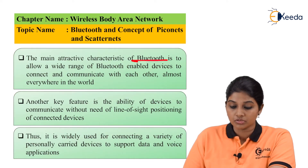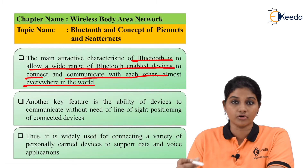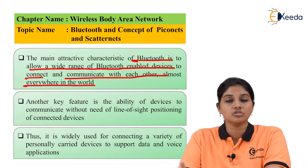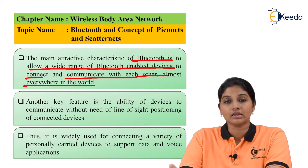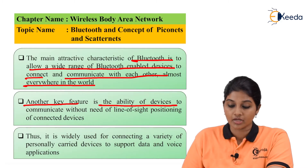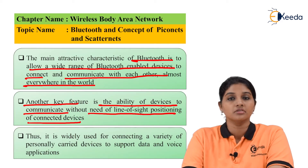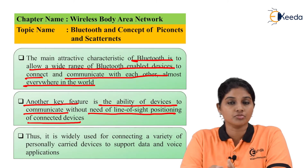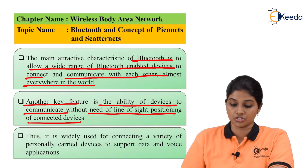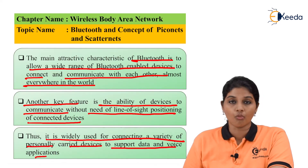The main attractive characteristic of Bluetooth is that it allows a wide range of Bluetooth-enabled devices to connect and communicate with each other almost everywhere in the world. There is no restriction on how many devices can be connected or how they connect. Another key feature is its ability to communicate without requiring line-of-sight positioning between devices. Because of this, it is widely used for connecting a variety of personally carried devices that support data and voice applications.